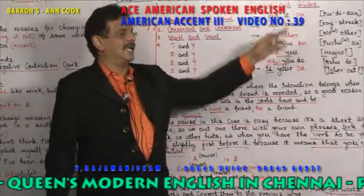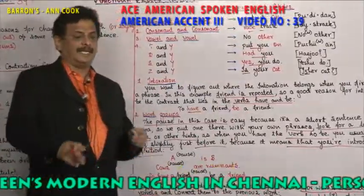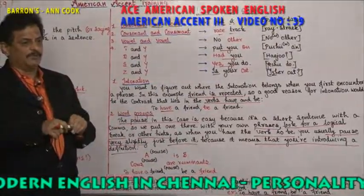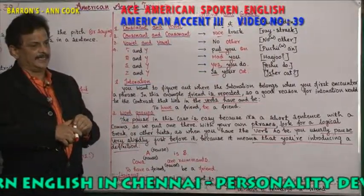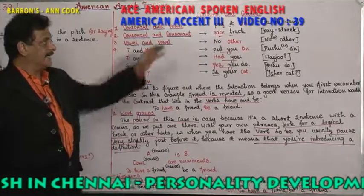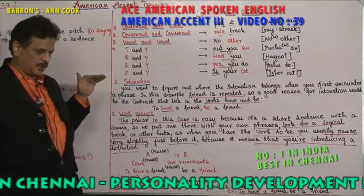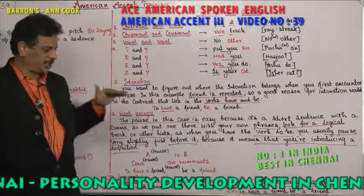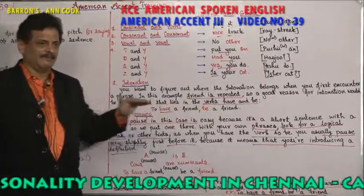Then, liaisons and glides. What do you mean by liaisons? Word and word getting connected is called a liaison. Glides means the connection goes softly.